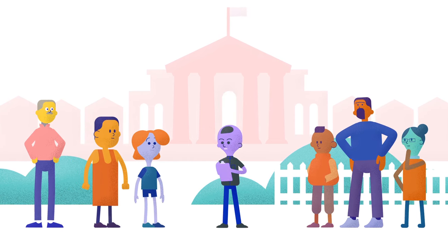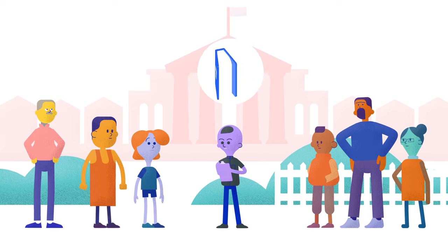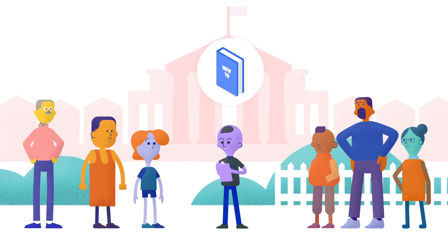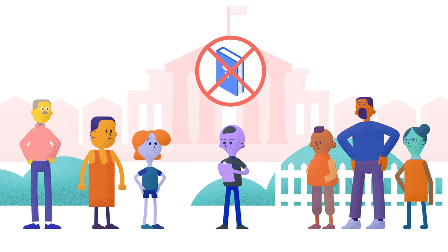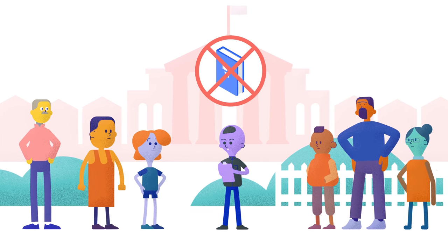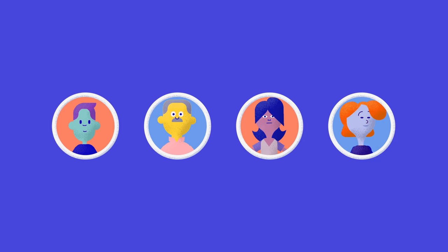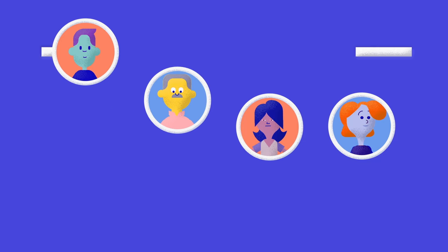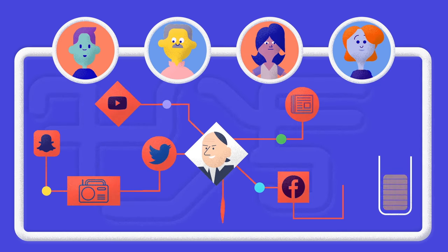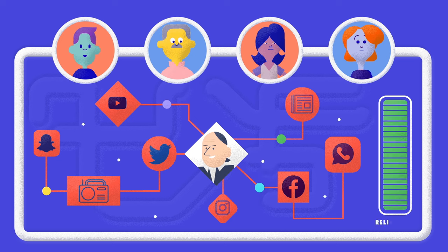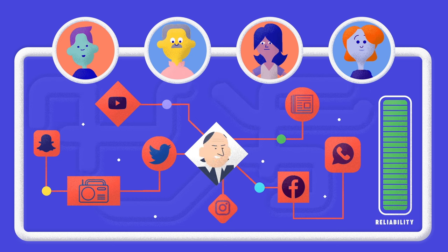But as long as you don't create a how-to manual, active inoculation is an effective option. A study conducted in 2019 used an online game to train people to think like a disinformation producer.